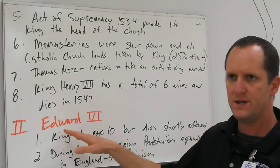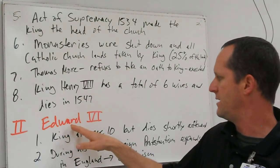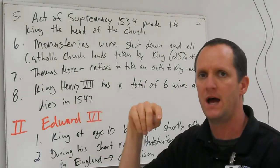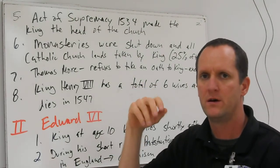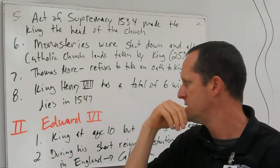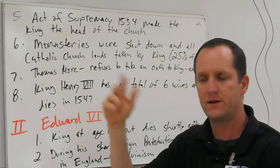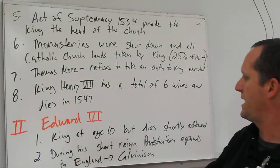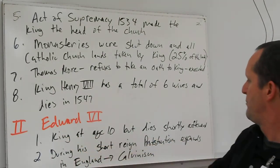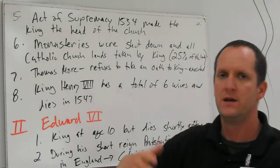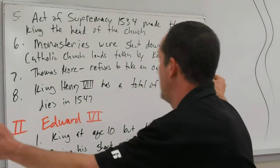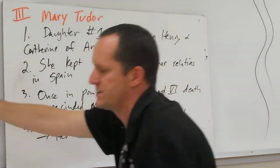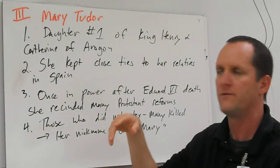By one of his wives he had a son, Edward VI. Edward was the third child of King Henry VIII, but he was nevertheless a boy and took the throne after Henry died. He became King at age 10 but died shortly after. During his short reign, Protestantism expanded in England, in particular Calvinism. Being a young leader, he didn't have much say and oftentimes listened to his advisors or people of the court.